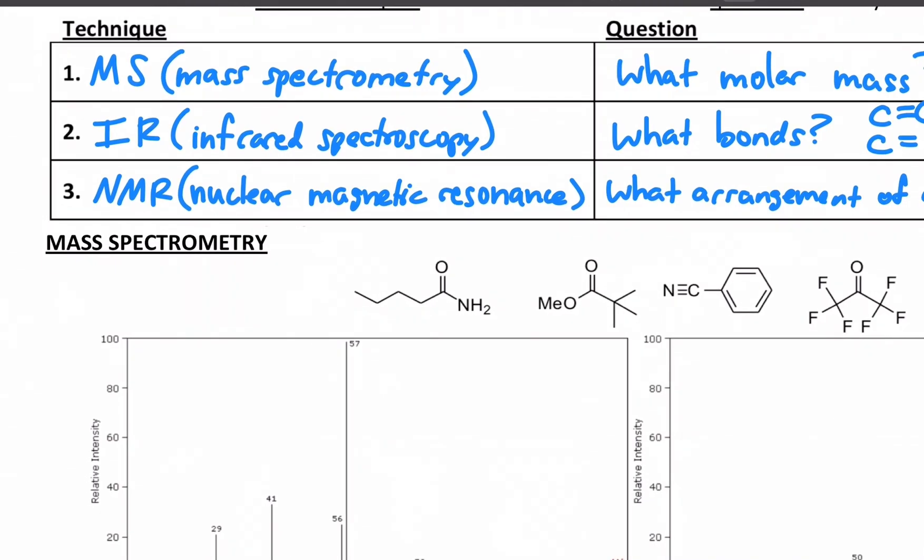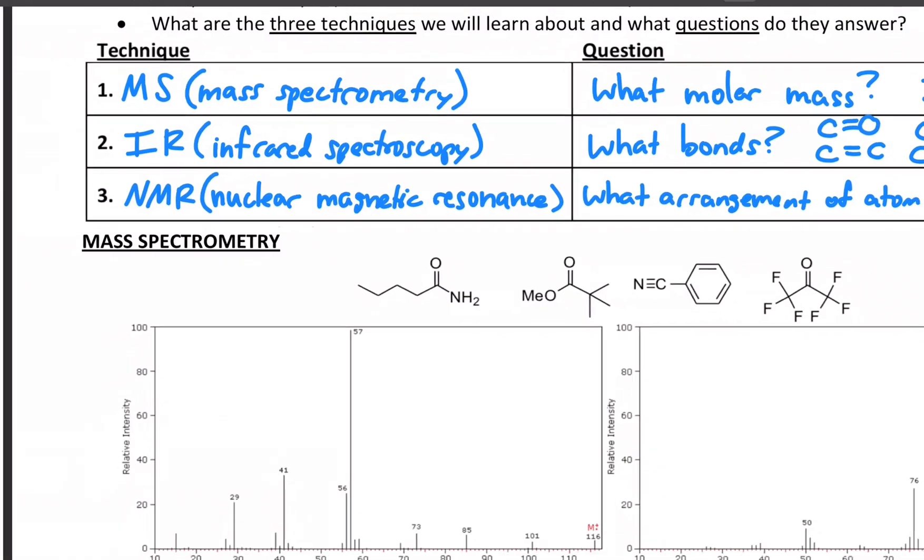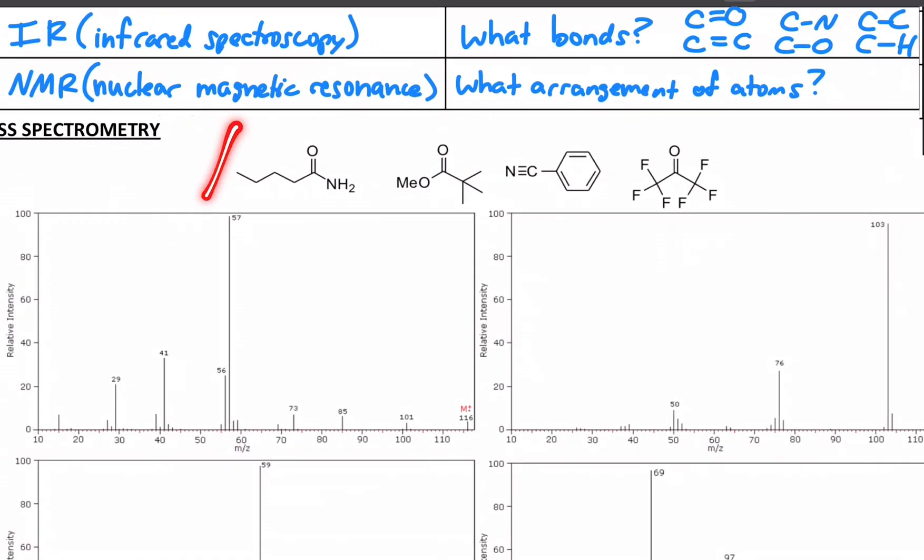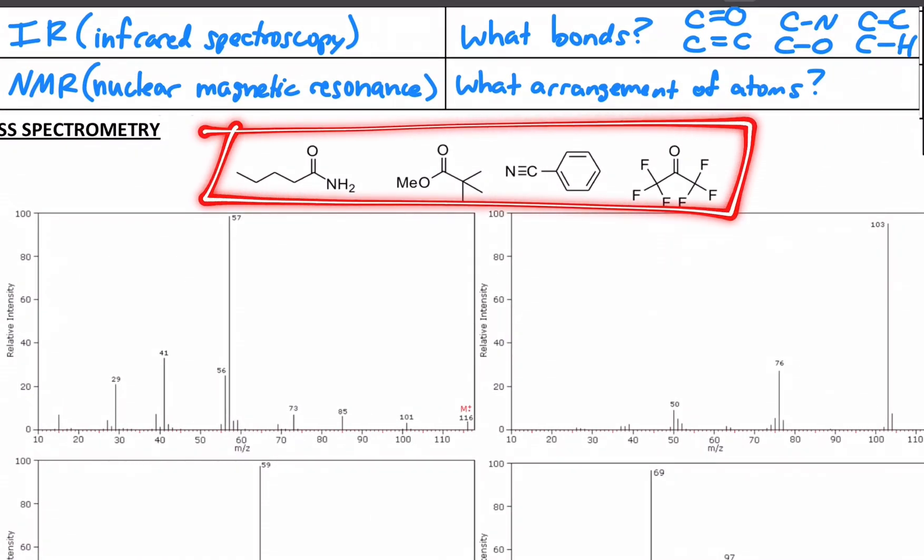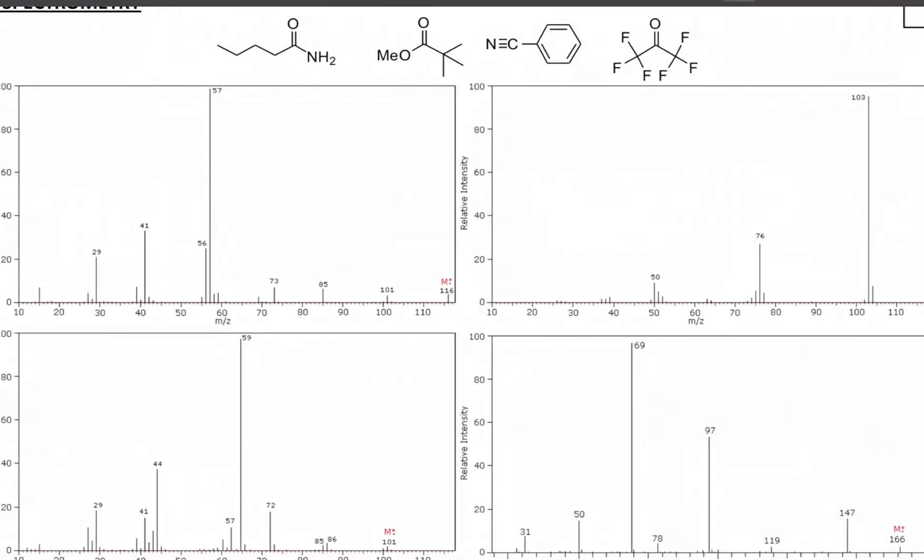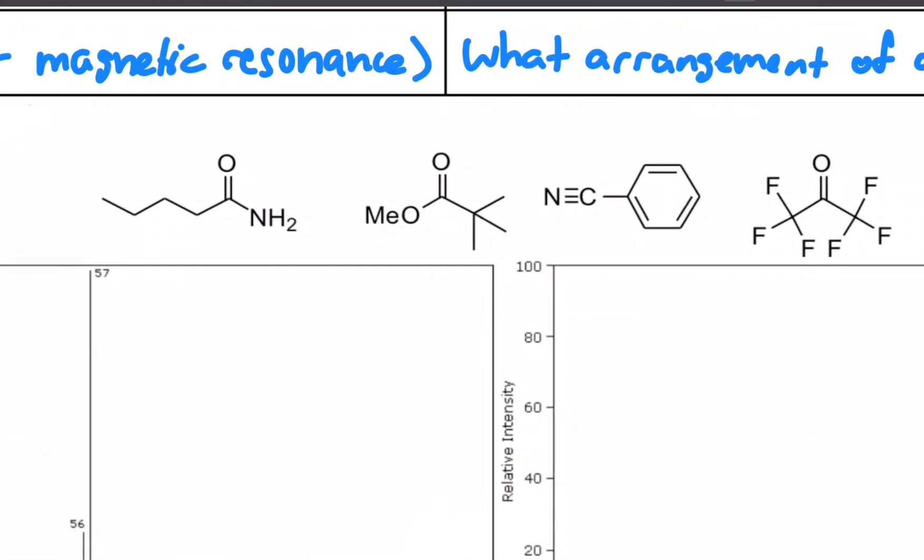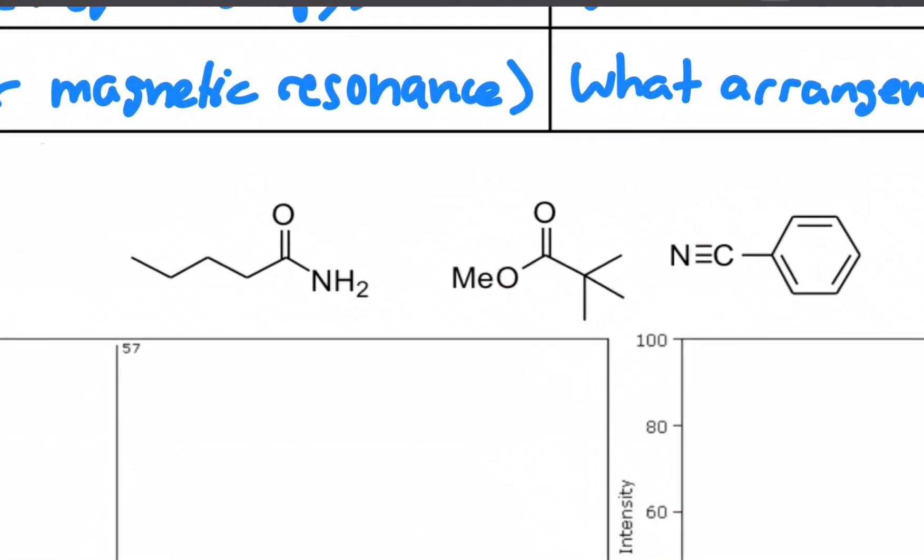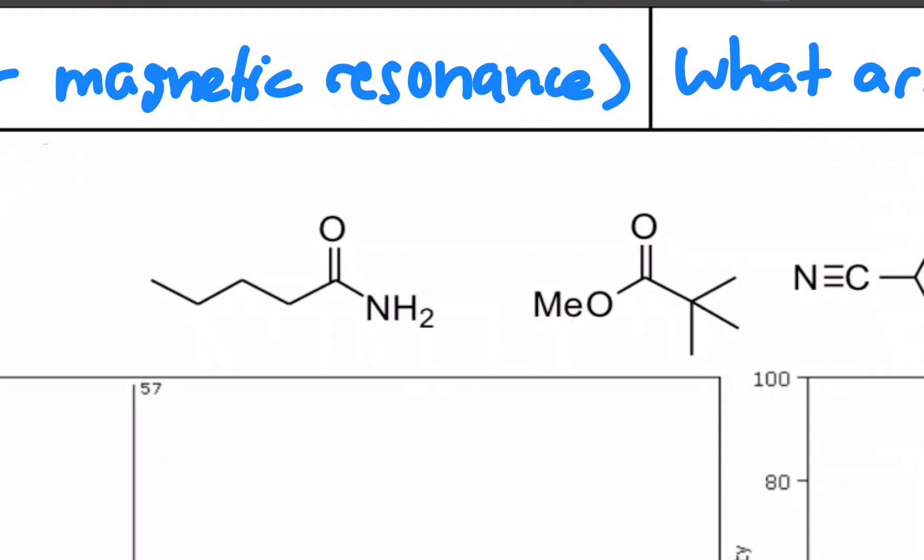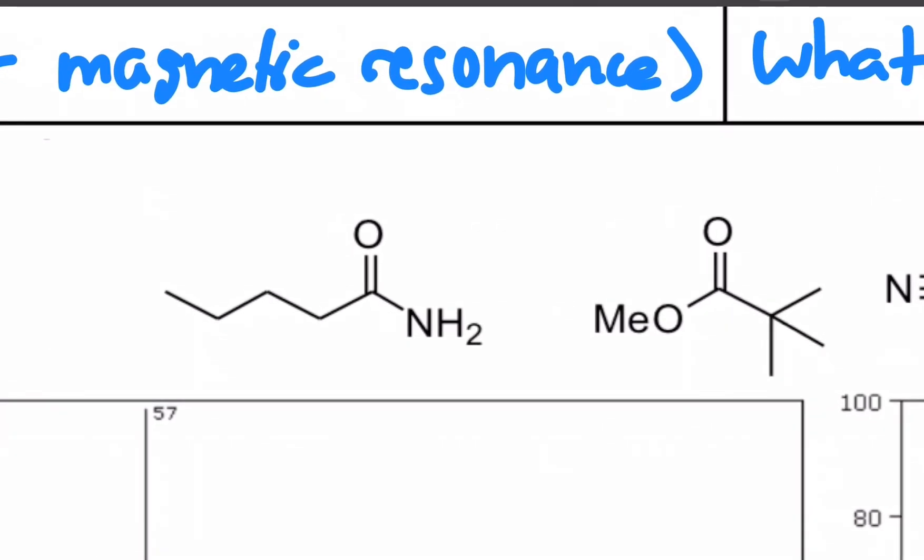So here are four molecules that have very different architectures and different molar masses. And below them are the four mass spectra that go with them, but they're all mixed up. So we're going to match which one goes with which. If we were doing this in the lab, we would need to know how much each of these molecules weighs, which means we need the molecular formula.